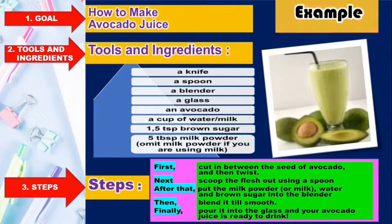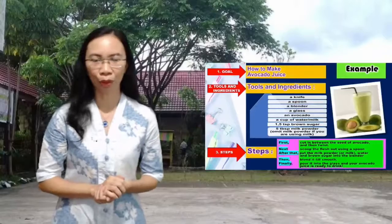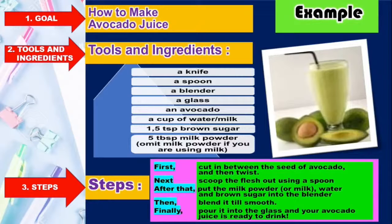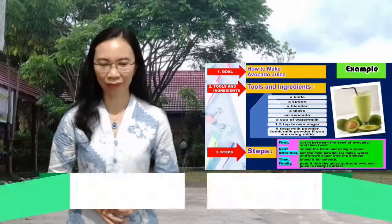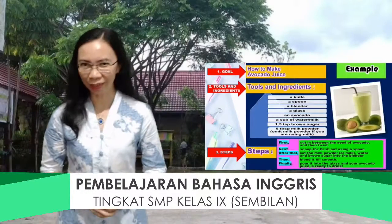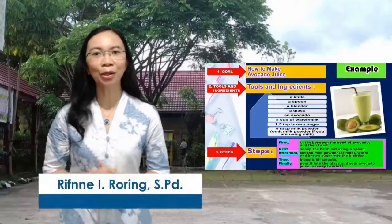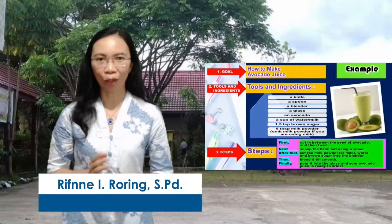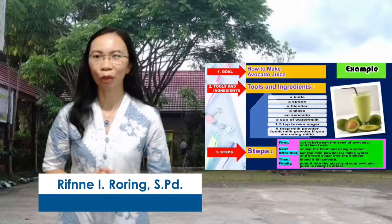Untuk unsur kebahasaan, the language features — di sini kita bisa lihat penggunaan temporal conjunctions yang diberi warna biru: first, next, after that, then, and finally. Kalimat yang diberi warna hijau merupakan penggunaan commands or imperative sentences — kalimat perintah, misalnya: cut in between the seat of avocado and then twist. Kalimat-kalimat dalam steps semuanya dalam simple present tense. Kita sudah paham tentang generic structure, language features, dan social function dari procedure text.